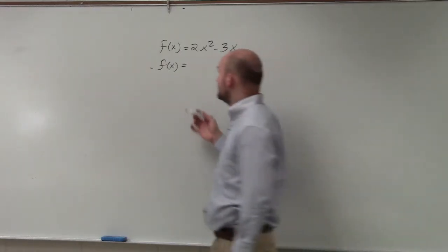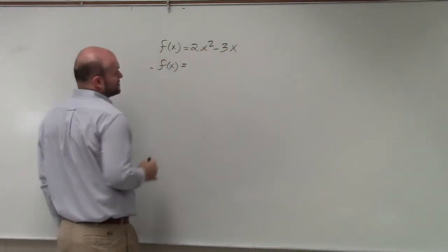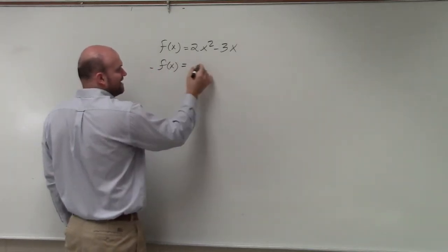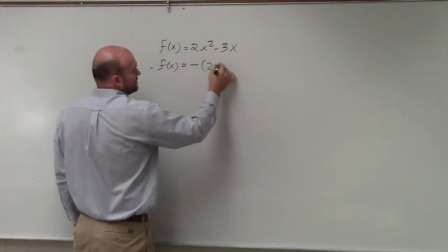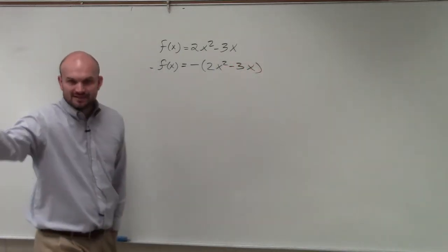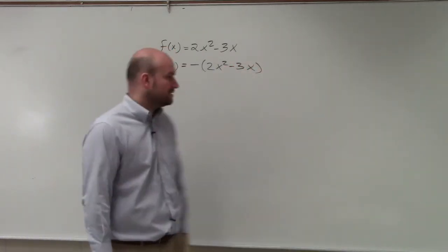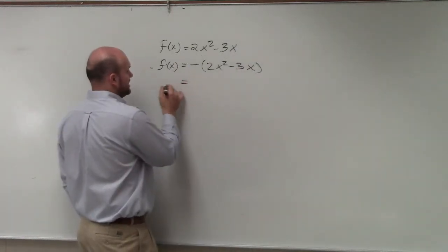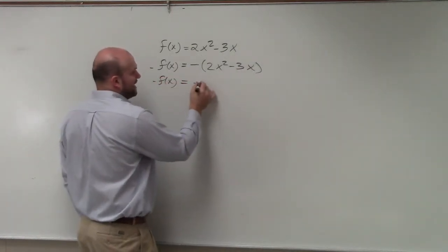So if we know f(x) = 2x² - 3x, I can rewrite negative f(x) as -(2x² - 3x). Going back to what we did in our assignment, we have -f(x) = -2x² + 3x.